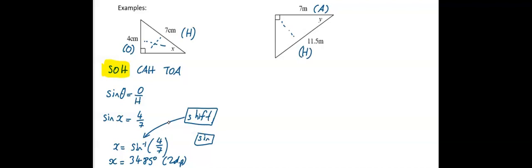Same idea in the next question. First we label our triangle. Relative to y, the seven is the adjacent side. The 11.5 is opposite the right angle, so it is the hypotenuse. We've got A and H, so write down SOHCAHTOA again.